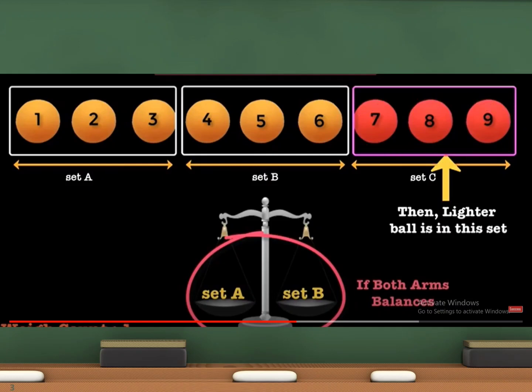Now, take set A and set B and place them on the physical balance. If the physical balance level is the same, then the lighter weight ball lies in set C.